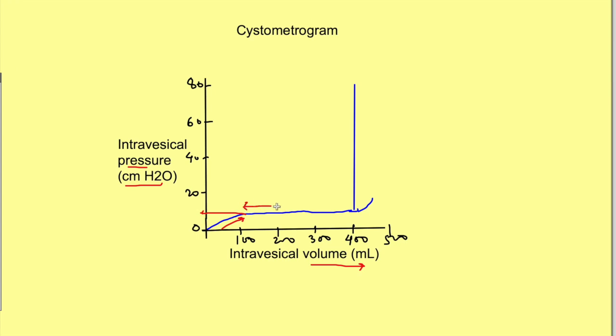Afterwards, the pressure is almost constant, and then again after a certain value—in this case 400 mL—the pressure starts rising. There are different components of this graph. This initial rise in pressure with increase in the volume is 1a, this is 1b, and again the rise is part 2.